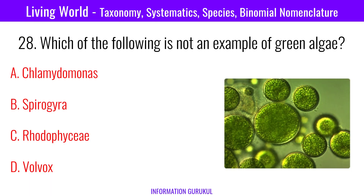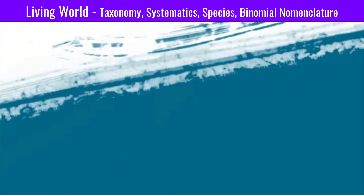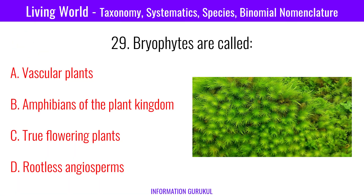Which of the following is not an example of green algae? Rhodophysia. Bryophytes are called amphibians of the plant kingdom.